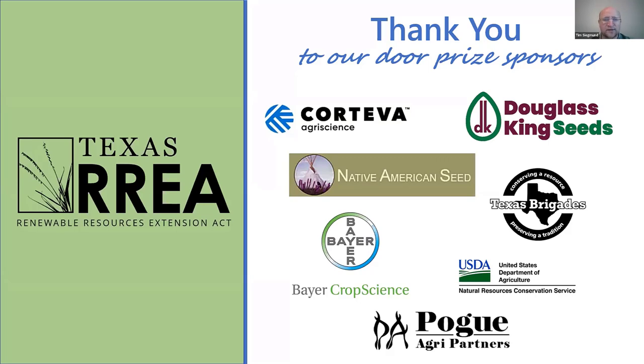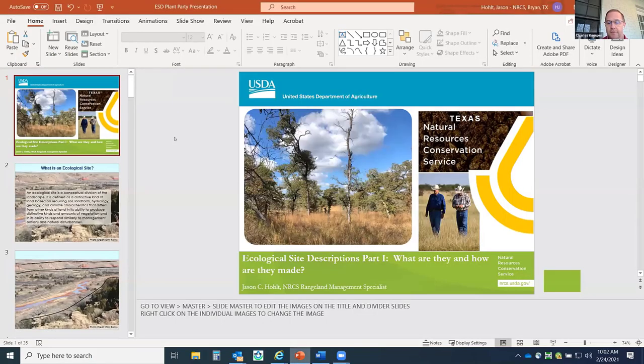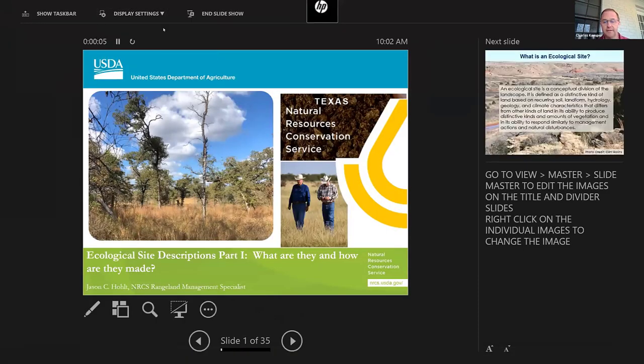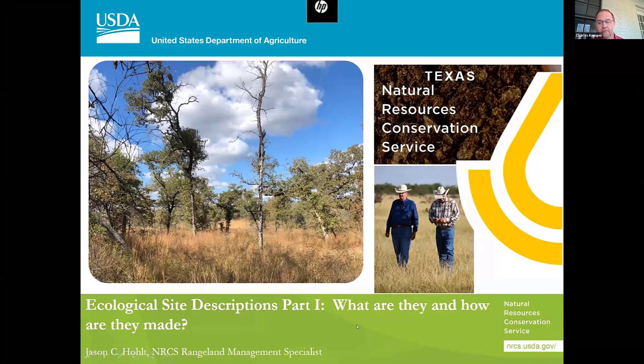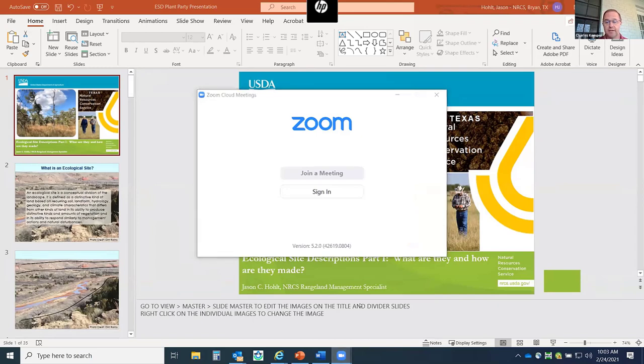We'll be moving through this real quickly. We have five presentations today, and I'll turn it over to Charles as we introduce our first speaker. Our first presenter is Mr. Jason Holt, a Zone Range Management Specialist with USDA NRCS located in Bryan, Texas. His primary responsibilities include providing technical assistance, training, and guidance to 38 NRCS field offices throughout East Texas, delivering technical and financial assistance programs to private landowners interested in conservation-oriented projects. Jason's first presentation will cover what ecological site descriptions are and how they're made.